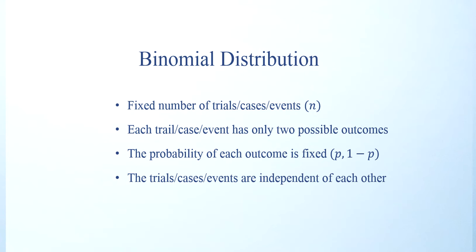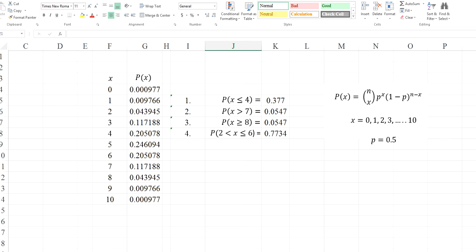So in any business situations or in any questions, when you see there are fixed number of trials, you should suspect it's a binomial distribution. And then make sure that each of the trial has only 2 outcomes. Make sure that the probability of each outcome is fixed. Make sure that each of the events or the cases or the trials are independent of each other. If that is the case, you can use Excel to construct the probability distribution and answer any probability questions related to that event.